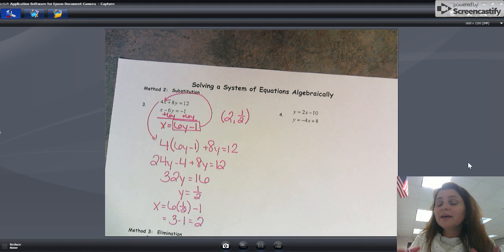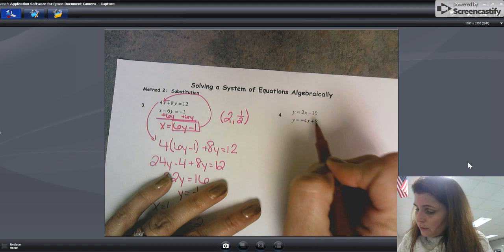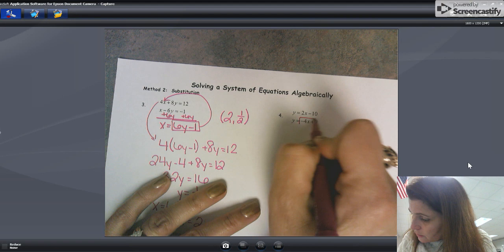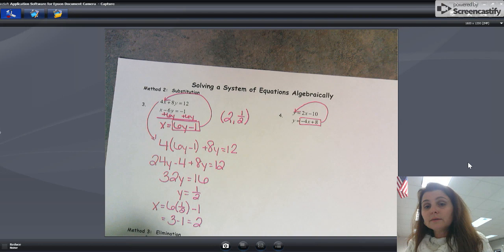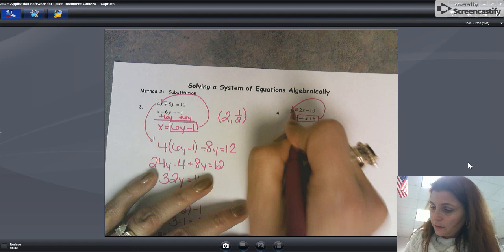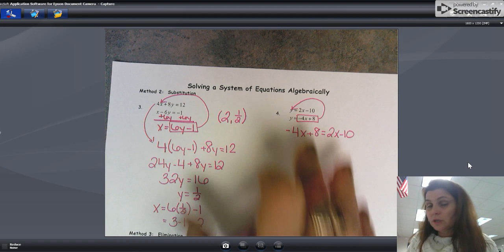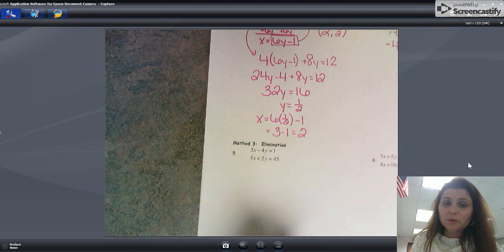All right, you're up for number four. Number four is a little bit different. You are still using substitution. This is set up perfectly for substitution already. Don't be scared. You can take everything over here that y equals, all of this right here, substitute it in for that y. So you can take all of this right here, sub it in for that y. So then I'll have, when I have this substituted in for that y, I'll have negative 4x plus 8 equals 2x minus 10. And then continue to solve that. Finish up solving that system.